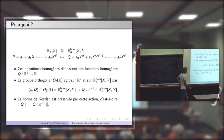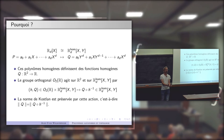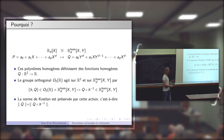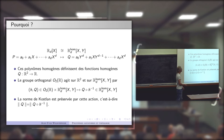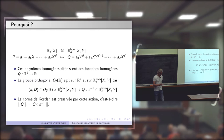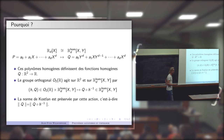Voilà ce que ça veut dire : si vous prenez des fonctions homogènes sur le plan, votre base canonique dépend d'une base x, y dans le plan. La norme de Kostlan dépend complètement de la base choisie dans le plan — sauf si vous choisissez une base orthonormée. Cette norme est donc plutôt attachée au produit scalaire du plan qu'à un choix spécifique de base : c'est en ce sens que la norme de Kostlan est plus de nature géométrique.